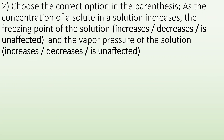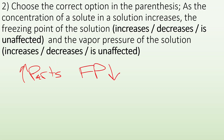Number two — choose the correct option in the parentheses. As the concentration of a solute in a solution increases, the freezing point of the solution does what? And the vapor pressure of the solution does what? If we increase the particles, the freezing point is going to go down — it's going to be harder to freeze stuff if we have things dissolved in it. And the vapor pressure is also going to decrease. If we have stuff dissolved in it, less stuff is going to want to vaporize; it'll hang out with the solute instead of going to the gas phase, which decreases the vapor pressure.